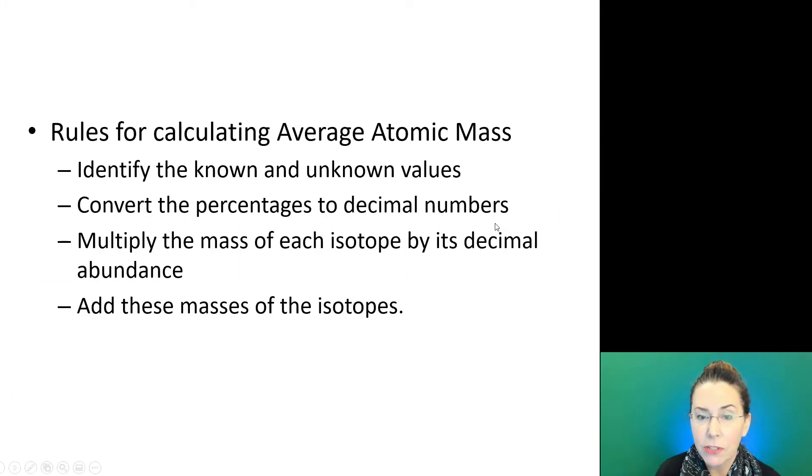So our rules for calculating average atomic mass: We're going to identify our known and unknown values. We're going to convert our percentages to decimals by moving our decimal places two spots to the left. We're going to multiply the mass of each isotope by its decimal abundance and then add these masses of the isotopes together to arrive at our weighted final average.